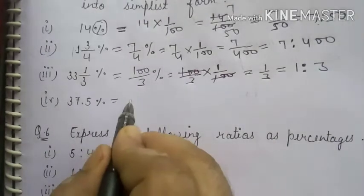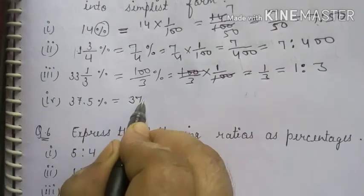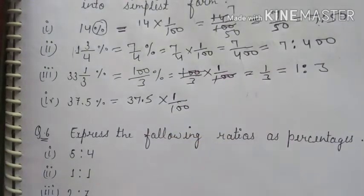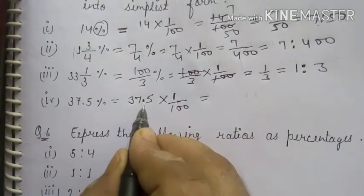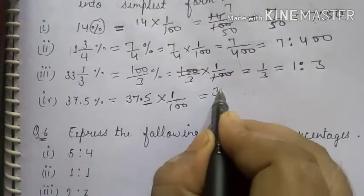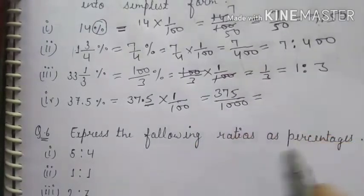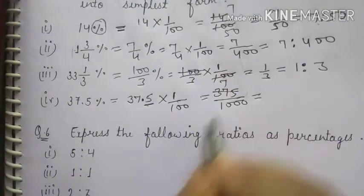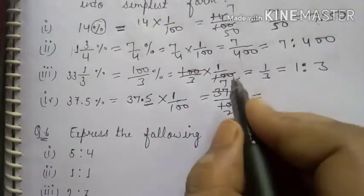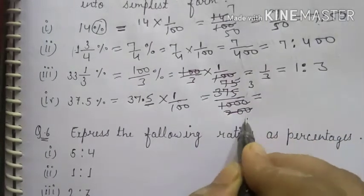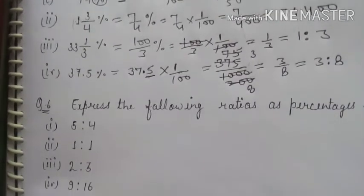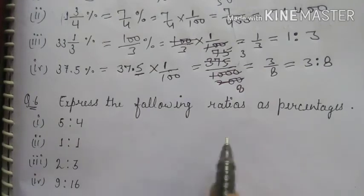Fourth part: 37.5% can be written as 37.5 upon 100. To remove the decimal, multiply numerator and denominator by 10 to get 375 upon 1000. Cancel by 5: 75 upon 200. Cancel again by 25: 3 upon 8. As a ratio: 3 is to 8. Now move to question 6: Express the following ratios as percentages.